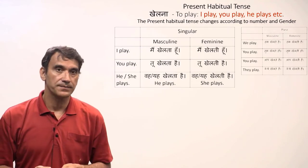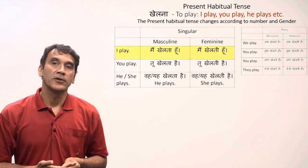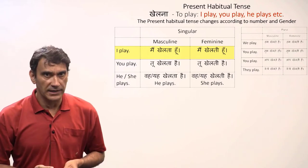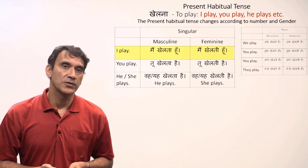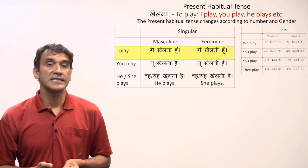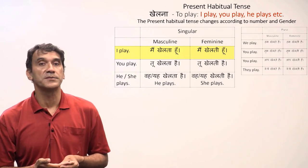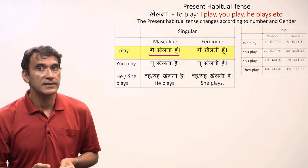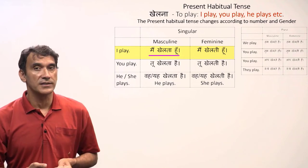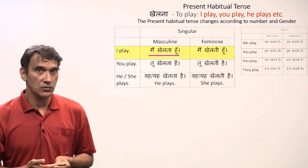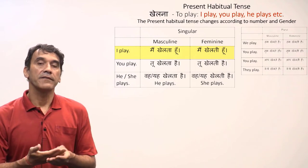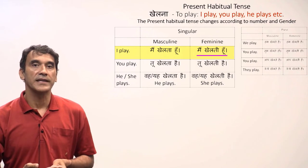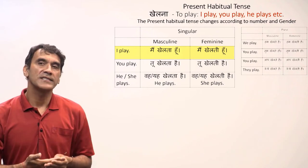The first person singular form: 'main khailtaa hoon' means I play — this is the masculine form, said by a boy. A girl would say 'main khailti hoon.' The participle changes according to the gender of the subject. If the speaker is masculine, he says 'main khailtaa hoon'; if feminine, she says 'main khailti hoon.' The only distinction between the two sentences is the choice of participle — masculine 'khailtaa' or feminine 'khailti.'